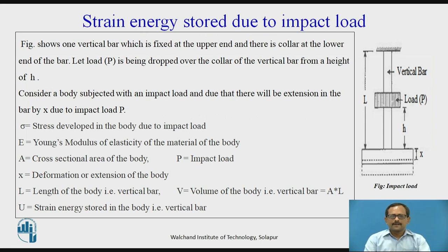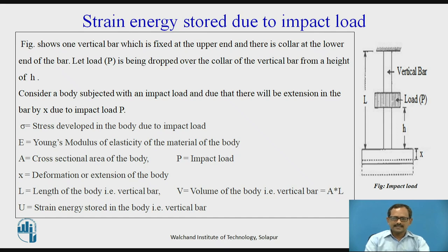The figure shows one vertical bar which is fixed at the upper end and there is a collar at the lower end of the bar. Let P be the load dropped over the collar of a vertical bar from a height of h as shown in the figure. Now, at this moment, we will take a pause and think about what is the impact load and what are the various examples of impact load.